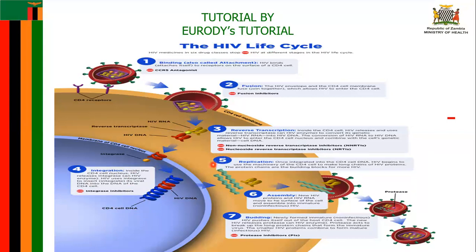Stage five is called the replication stage. Once integrated into the CD4 cell DNA, HIV begins to use the machinery of the CD4 cell to make long chains of HIV proteins, and these protein chains are the building blocks for HIV itself. Stage six is called the assembly stage — at this stage the HIV proteins have already been produced, and the new HIV proteins and HIV RNA move to the surface of the cell and assemble into immature HIV.